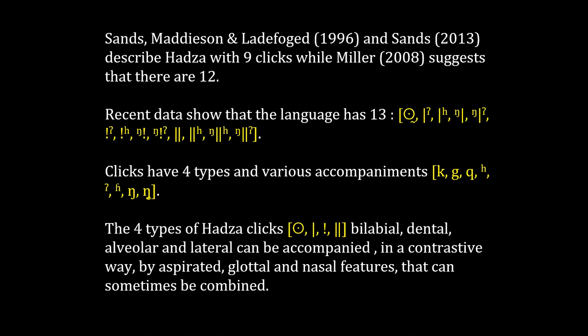The four types of Hadza clicks — bilabial, dental, alveolar, and lateral — can be accompanied in a contrastive way by aspirated, glottal, and nasal features that can sometimes be combined.